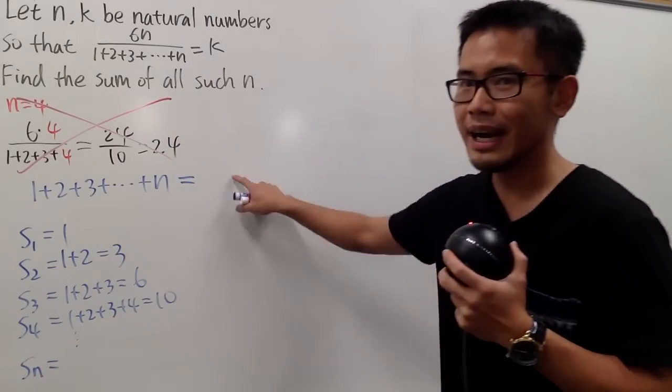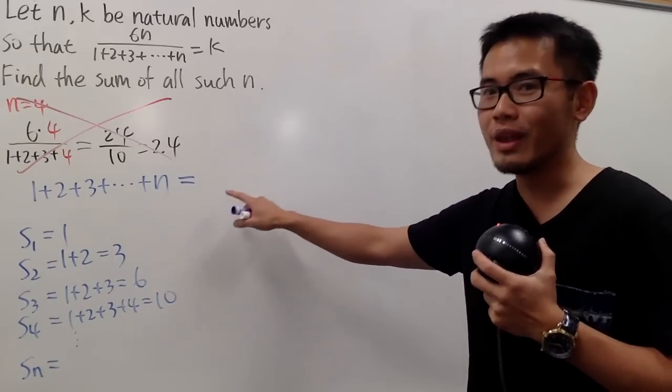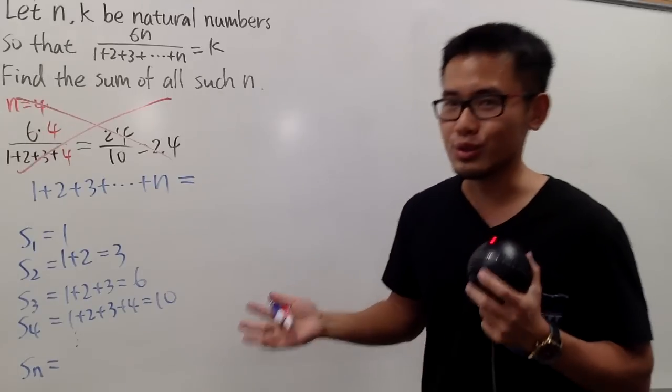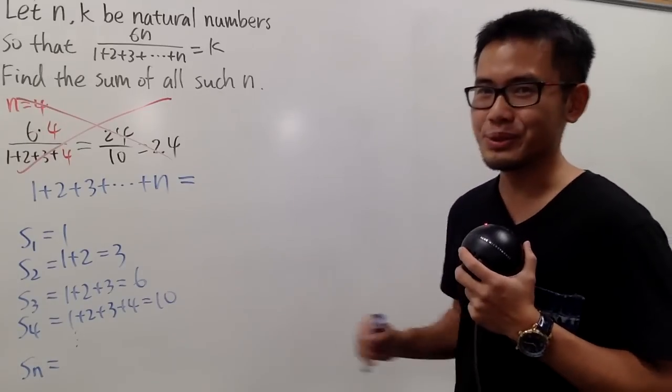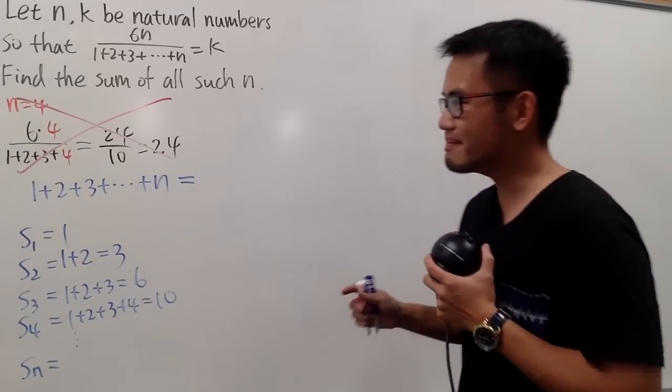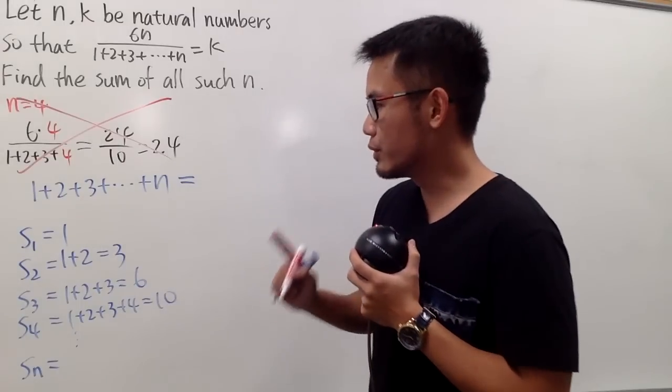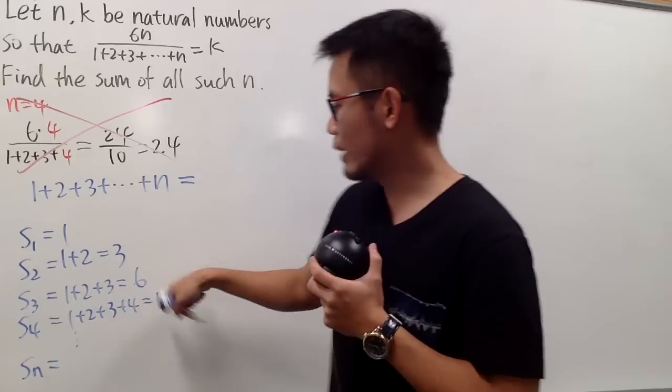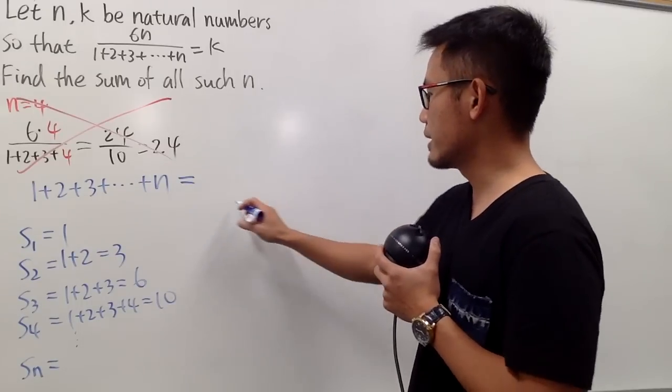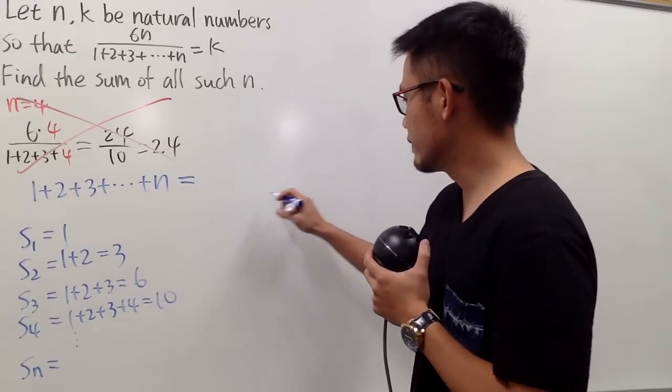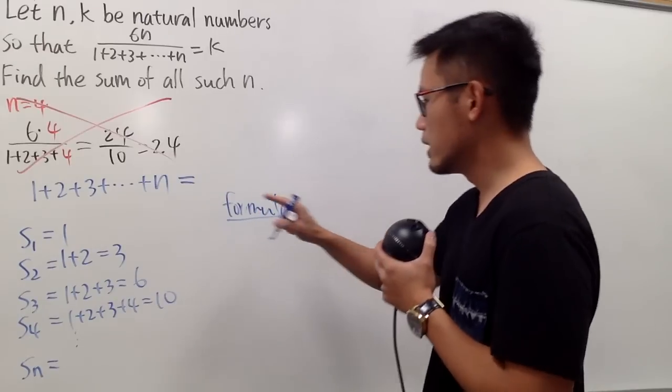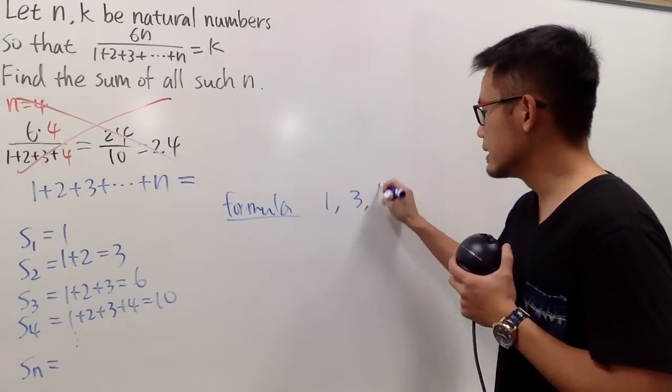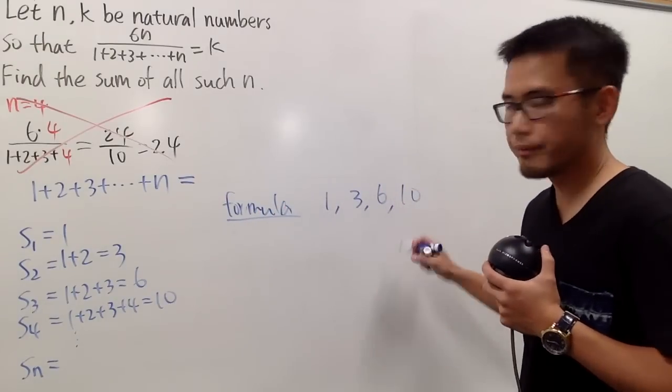And to do this, I know the answer is n times n plus 1 over 2. You have so many ways to do it, but let me just continue to do it this way for you guys. So what I would like to do is, I'm just going to write this down. I need to get a formula for 1, 3, 6, 10, and so on, right?